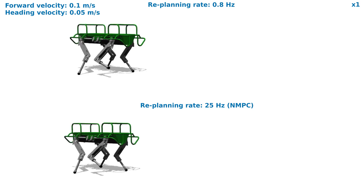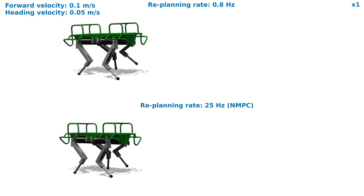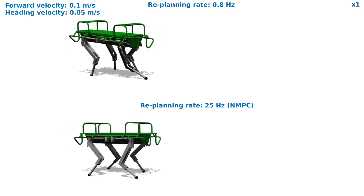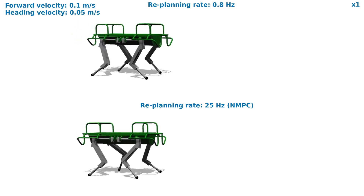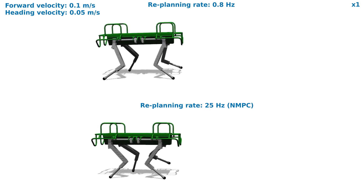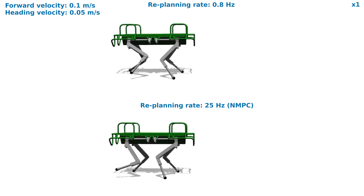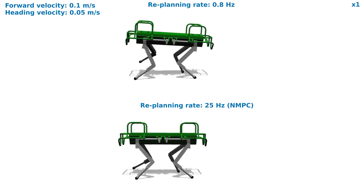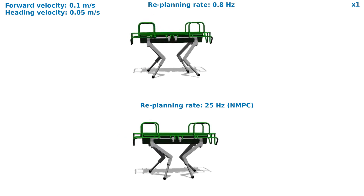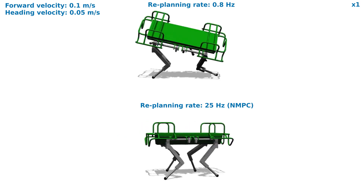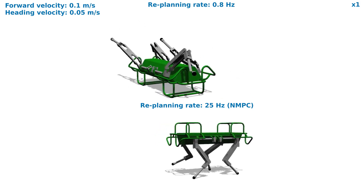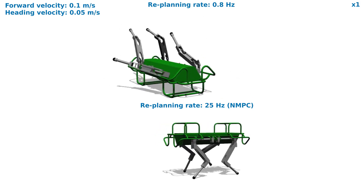This simulation demonstrates the importance of continuous replanning at a higher rate. The robot is commanded with a constant forward and heading velocity. Since replanning at a lower rate of 0.8 Hz leads to state drifts due to model uncertainties and tracking errors, the robot walks badly and falls in the end. However, with a higher replanning rate of 25 Hz, the robot walks successfully because it continuously compensates for these uncertainties and errors.